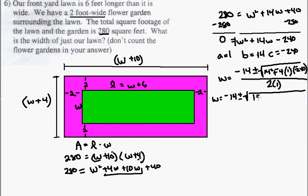Negative 4, times 1, times negative 240 is equal to 960, and that's all over 2.